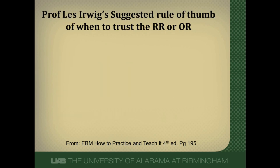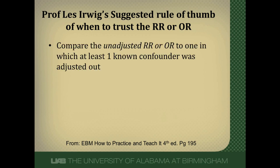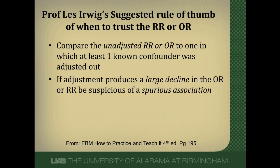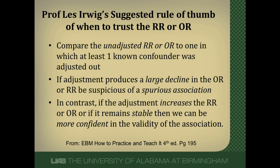When should you believe the relative risk or odds ratio in a study? Professor Les Erwig, an epidemiologist from Australia, suggests comparing an unadjusted or raw relative risk or odds ratio — which you may need to calculate yourself — to the odds ratio or relative risk adjusted for at least one known confounder. If adjustment produces a large decline, be very suspicious that the association is spurious. If adjustment increases or the estimate remains stable, you can be confident it's a valid association.